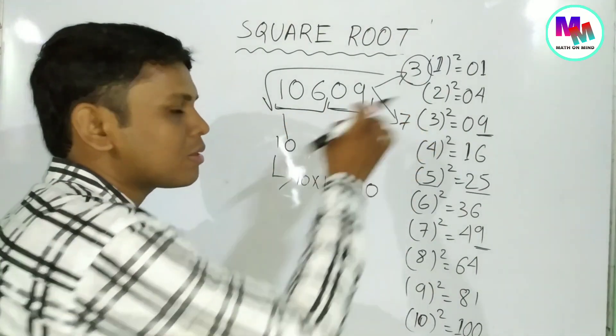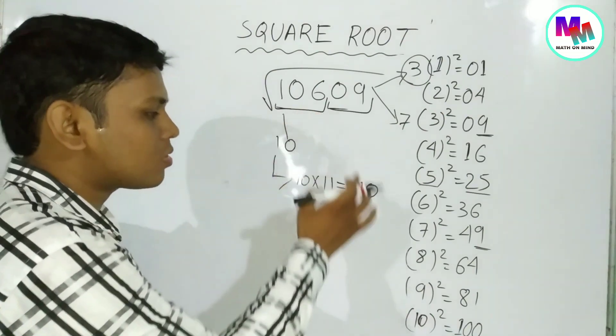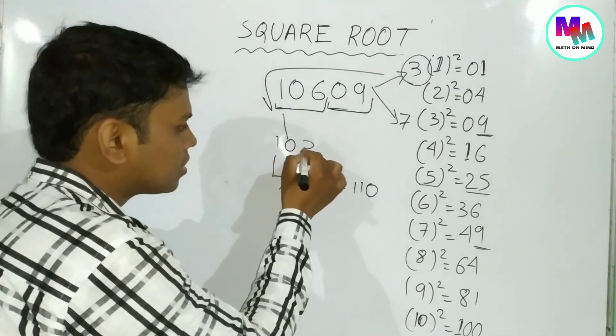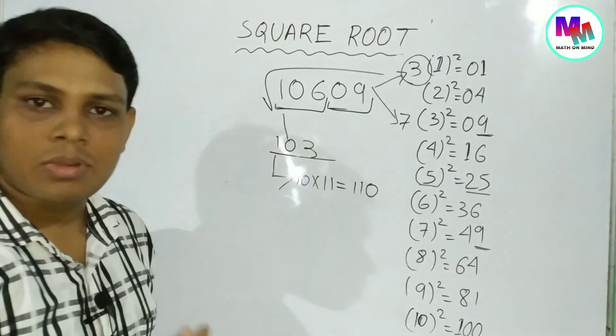By following this method, we arrive at the correct square root. This is how we systematically solve these problems.